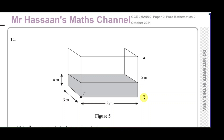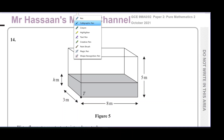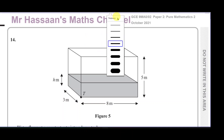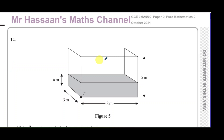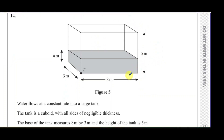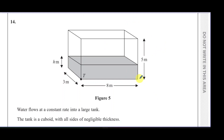Welcome back to Mr Hassan's Maths channel. I'm now answering question number 14 from the October 2021 GCE Pure Mathematics P2 A-level paper from the UK syllabus, which corresponds to what we take in P4 in differential equations. This question is about a large tank into which water is flowing at a constant rate.